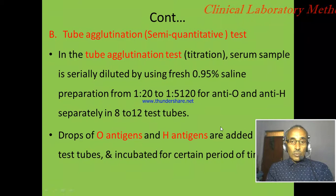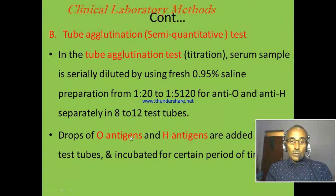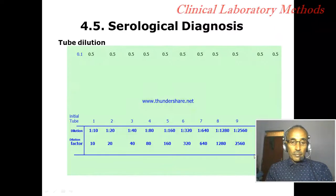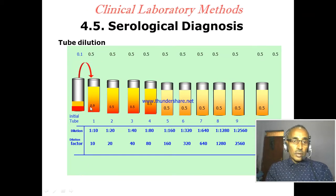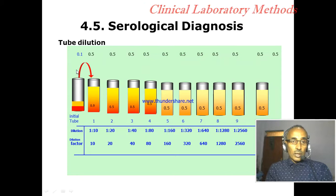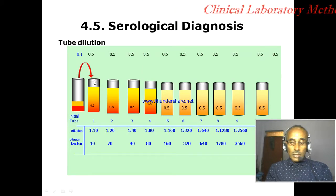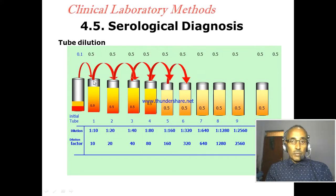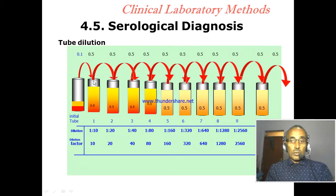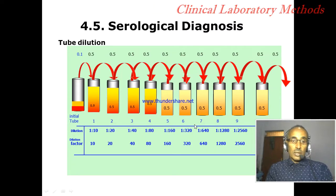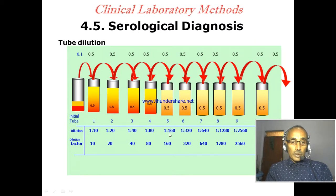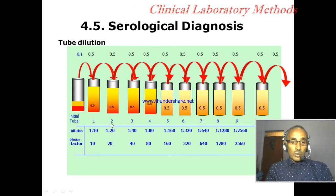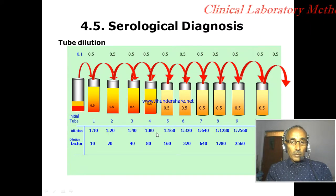After dilution, one drop of O antigen and one drop of H antigen are added to both series of tubes. After adding the antigens, the mixture is incubated for a certain period. Then 0.5 ml is transferred from each tube in serial fashion, and the last mixture is discarded. The result is reported based on the last tube showing a visible reaction — for example, if there is reaction at tubes 2, 3, and 4 but not at tube 5.